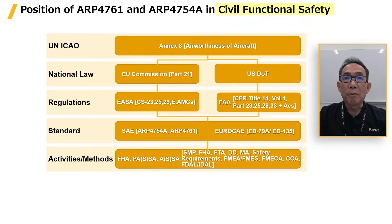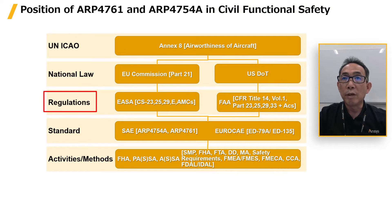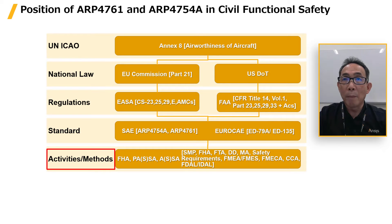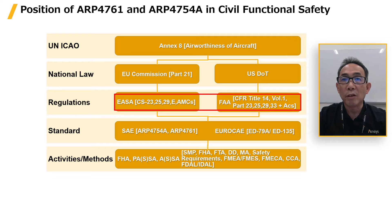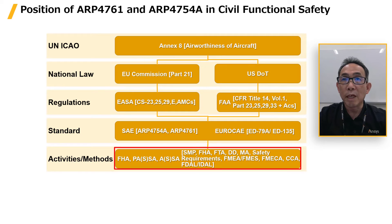This picture describes civil functional safety standards for aircraft and the position of standards, regulations, national roads, activities, and methods. From this picture, you can understand that aircraft have various standards, regulations, roads, activities, and methods organized to ensure their safety.